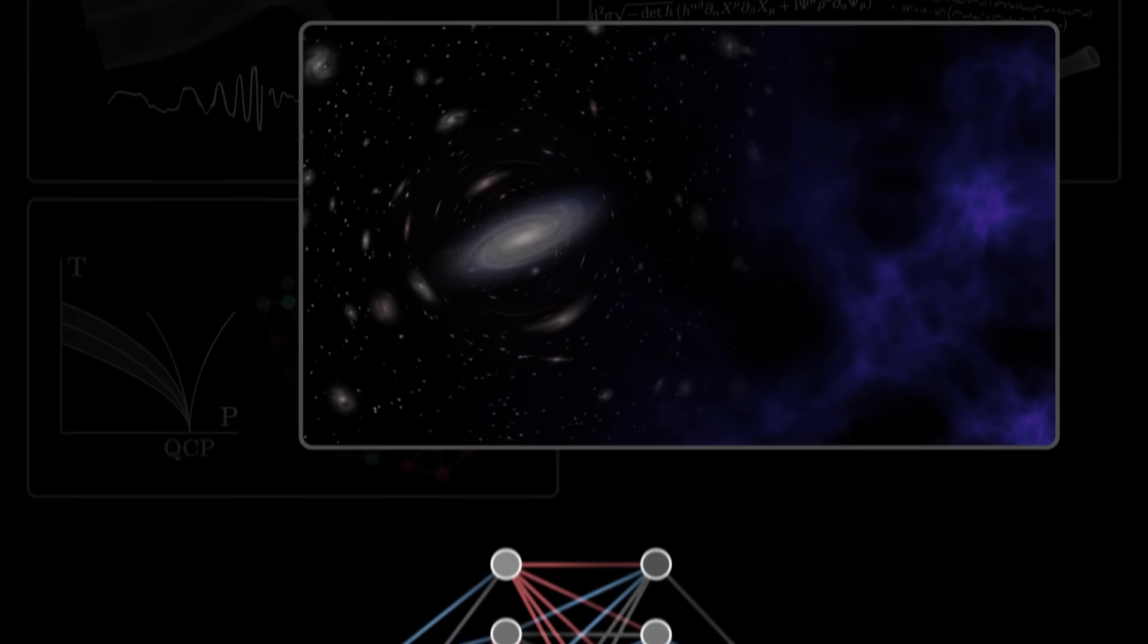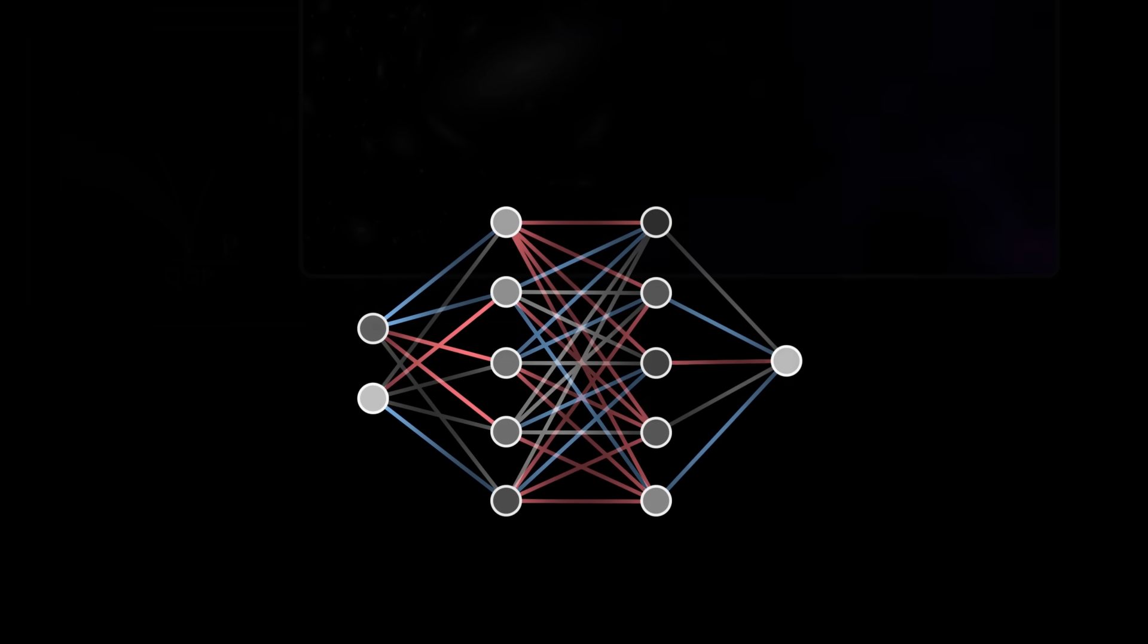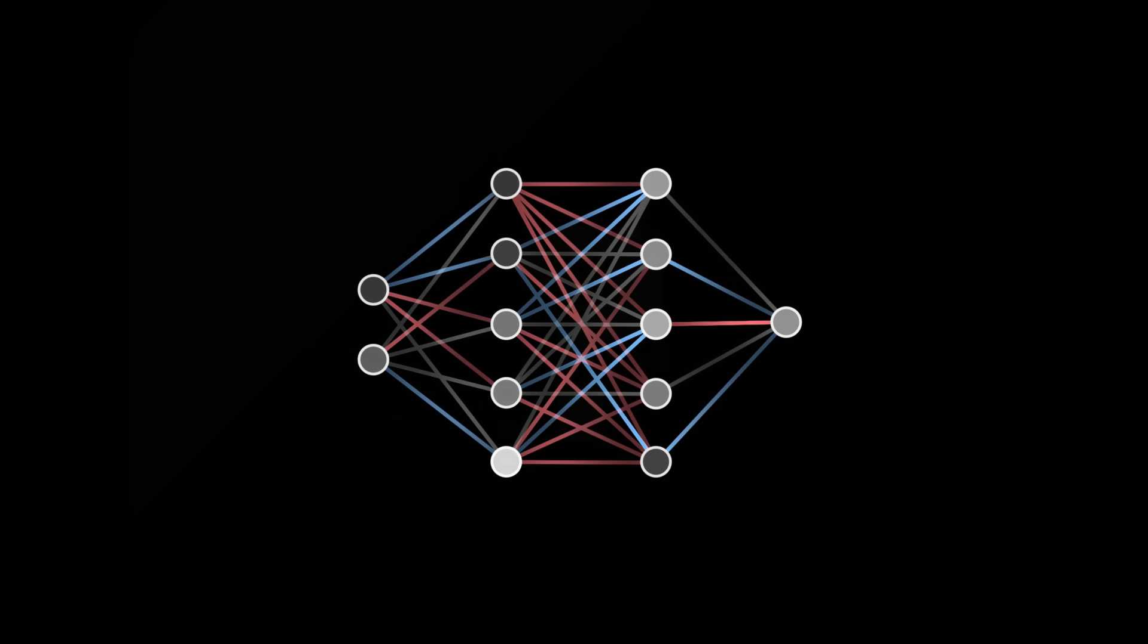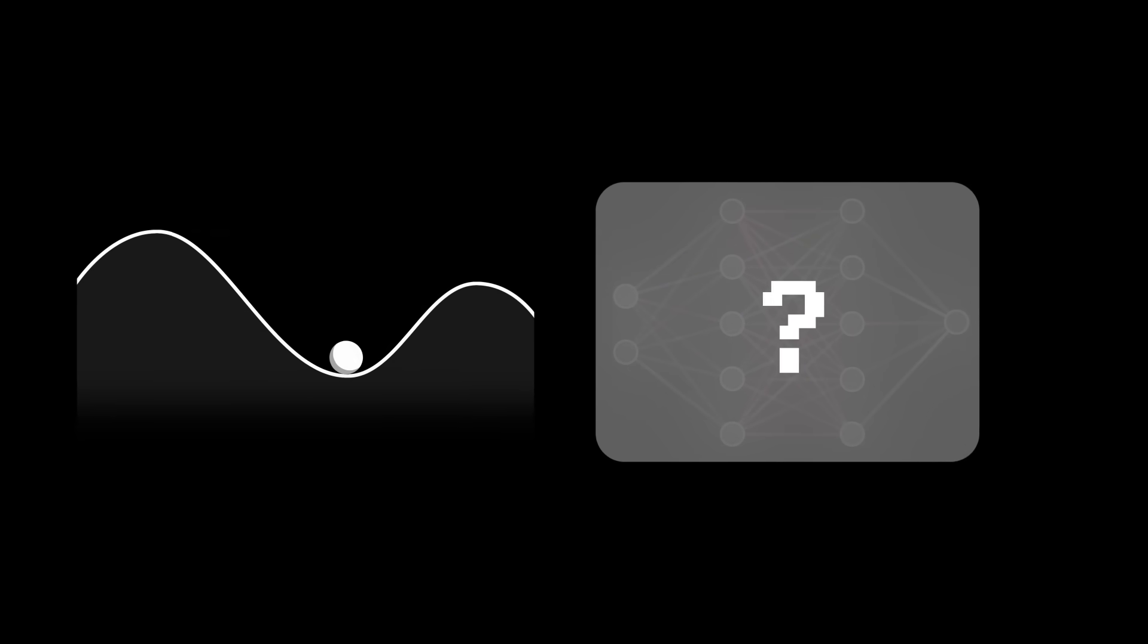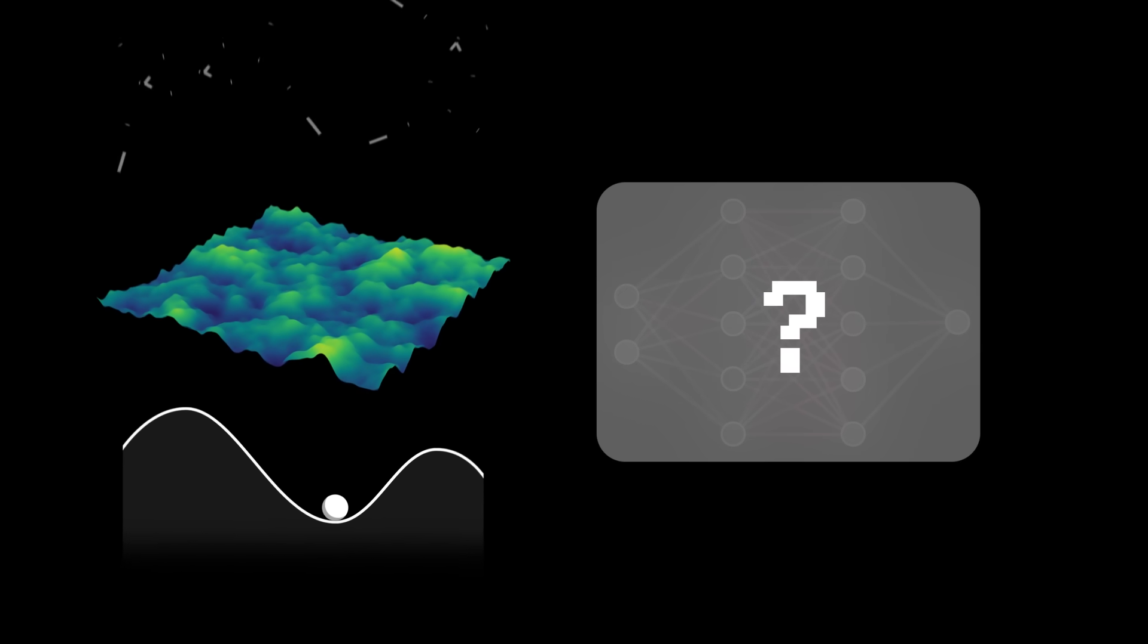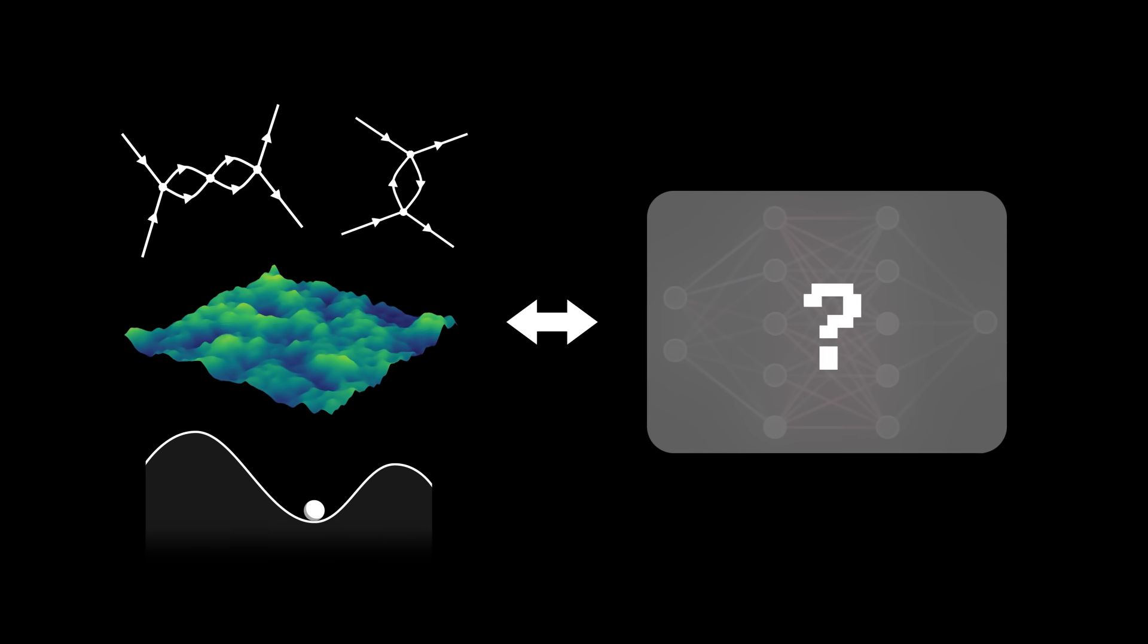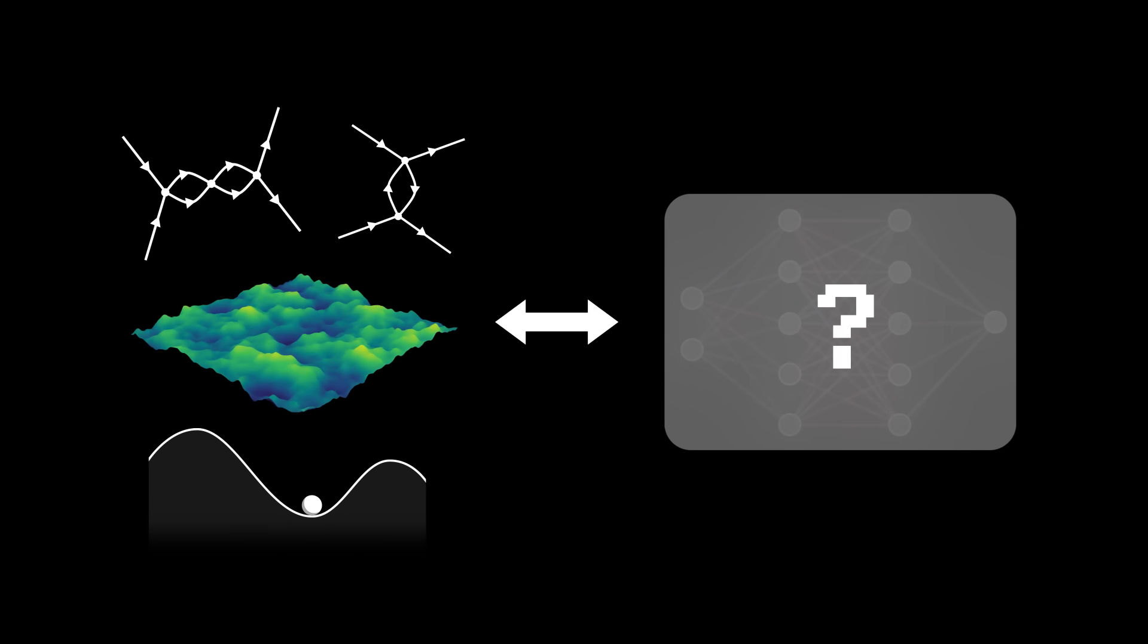Conversely, tools from physics can also help us better understand AIs, which are often perceived as black boxes that are difficult to interpret. Physical concepts such as energy landscapes, quantum fields, and interactions provide a bridge for translating AI into the language of physics.